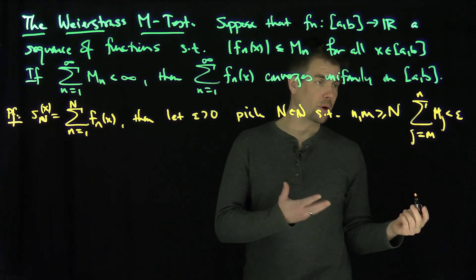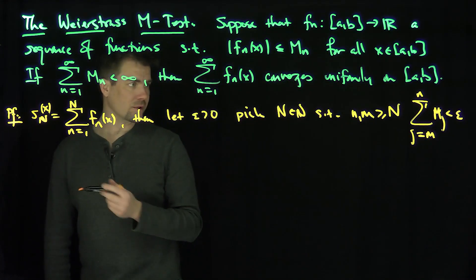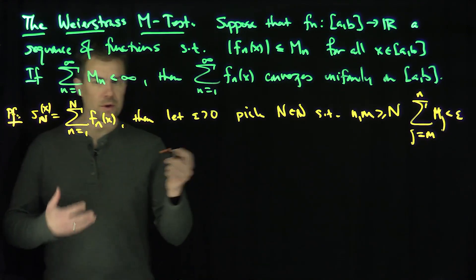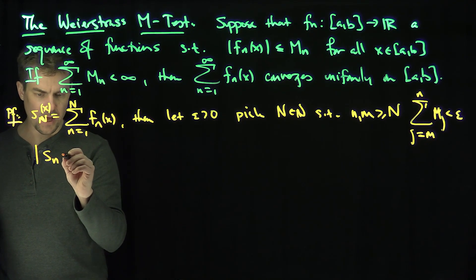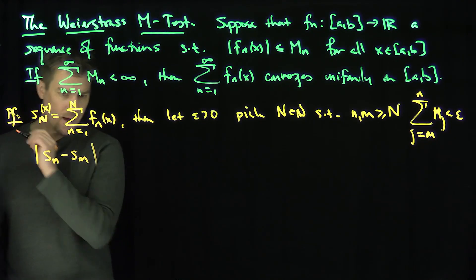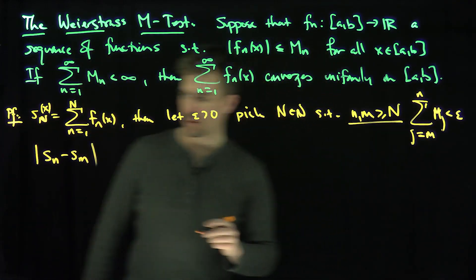In other words, we know that the partial sums form a Cauchy sequence, so I can make this less than epsilon, provided that m and n are larger than some number N. Now let's consider S_n minus S_m under the condition that n and m are bigger than or equal to N.